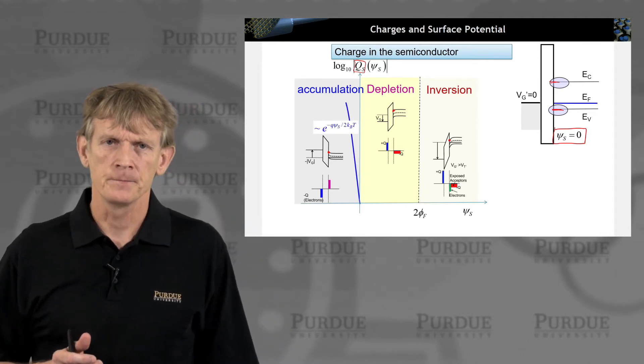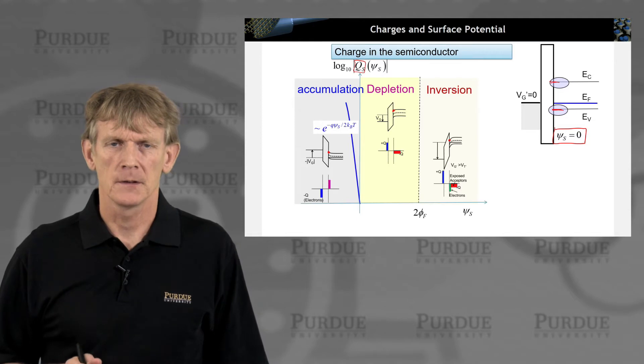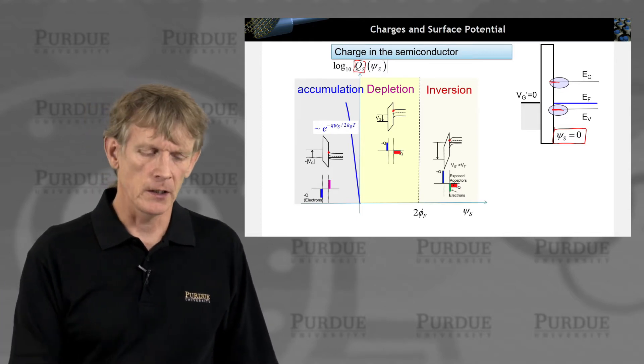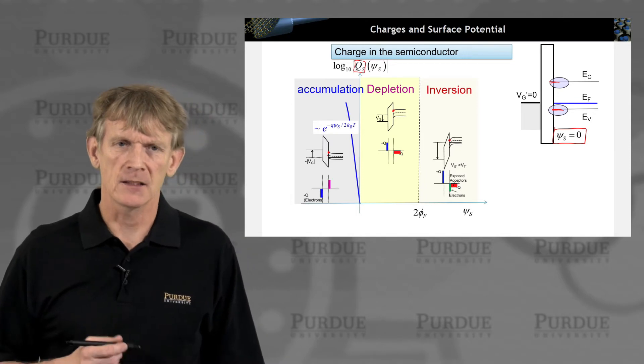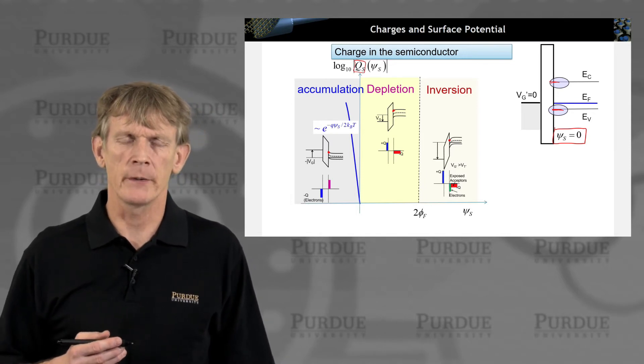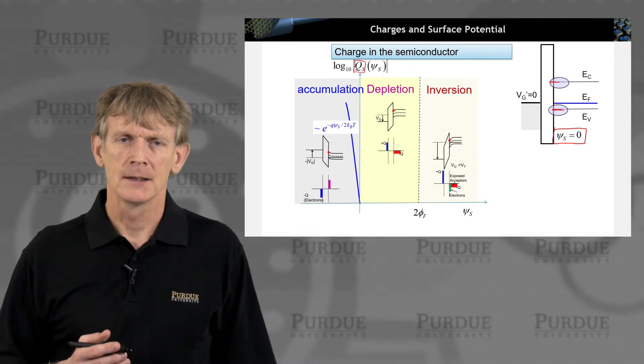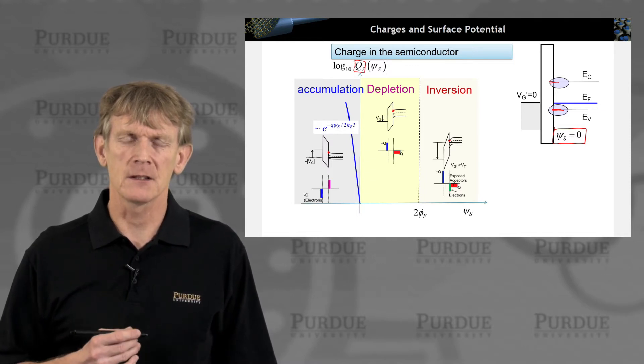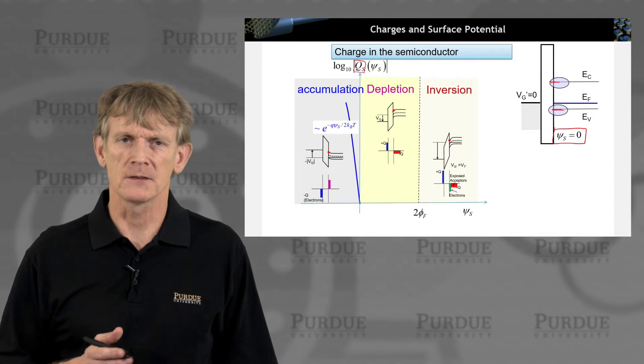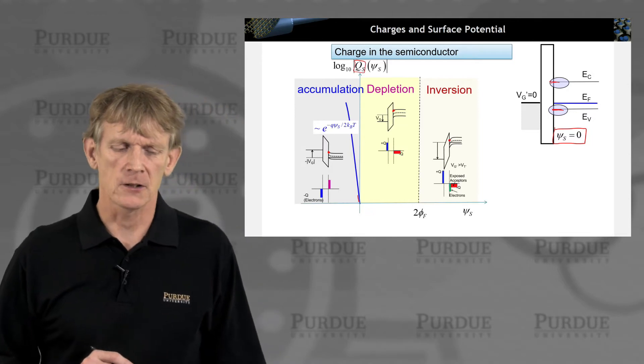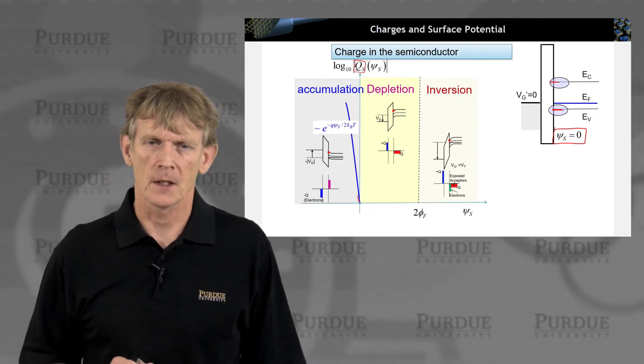Now, if we are in accumulation, you can pile up majority carriers right at the interface really well. It's an exponential process. You need to just bend the bands just ever so small that you can pile up charges against the interface, and the dielectric response is there, and you fill the states, and it's an exponential rise as a function of the surface potential.